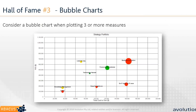Bubble charts are something I'm personally a huge fan of. They allow you to show three or more measures in one chart concisely. Two of those measures use position — the X and Y axes — for the most significant measures, while supplementary measures can be shown with bubble size, colour, border, or even shape. Keep it simple and don't show more than you need to, but when you do need to show more than two things, this is a fantastic and relatively easy-to-interpret approach.